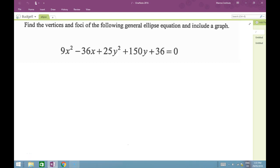Good day. Today we're going to look at an ellipse. We have the equation in front of us: 9x² - 36x + 25y² + 150y + 36 = 0. This is the general equation form of an ellipse.